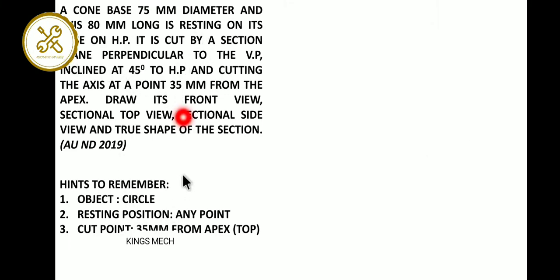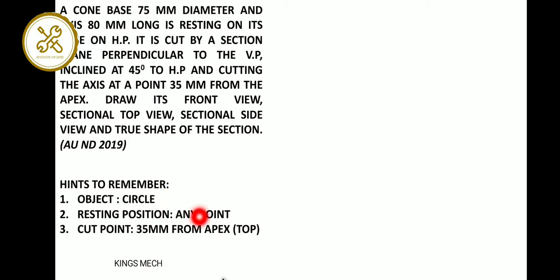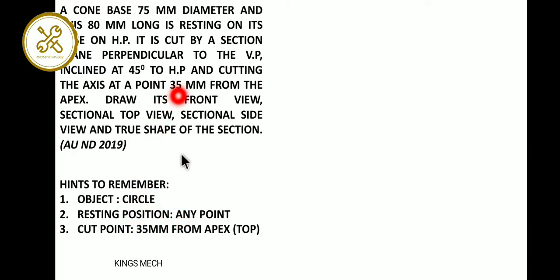What are the hints to remember? The object is a circle - a cone. We have two points only in the base circle. Resting on base means the cut point is 35 mm from the apex. The apex is nothing but the top of the cone.